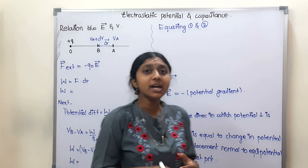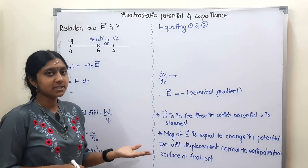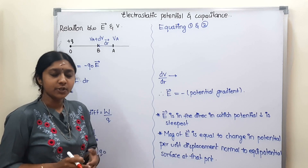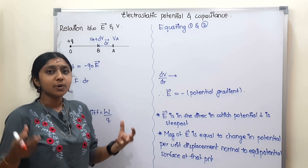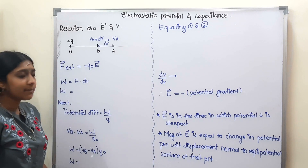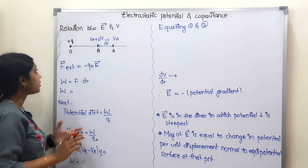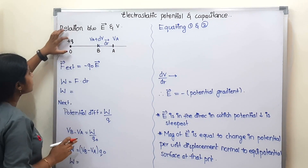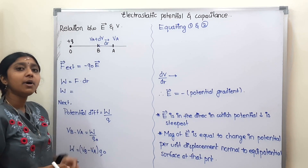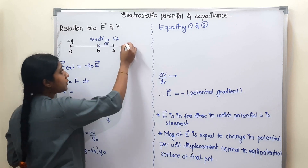We will talk about the electric field — what we covered in the first chapter — and the electric potential from previous videos. What is the relation between these two? The origin is a positive charge, and the electric field points outwards.